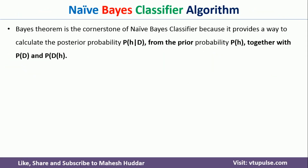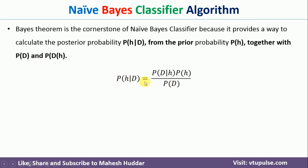Bayes theorem is the basic building block for the Naive Bayes classifier. First, we will try to understand what Bayes theorem is. The Bayes theorem is defined with this formula, where probability of h given d is called the posterior probability, which is equivalent to probability of d given h — that is the likelihood — multiplied by probability of h, the prior probability, divided by probability of d, the probability of the given dataset. Here, d is the dataset and h represents a hypothesis from a hypothesis space.